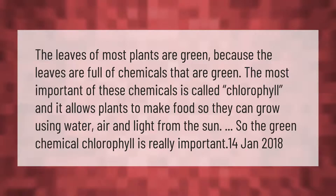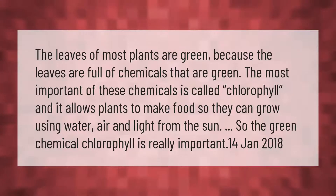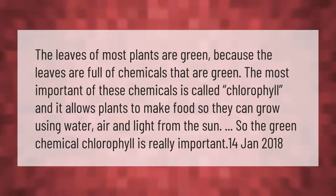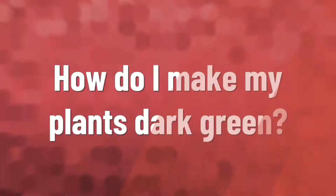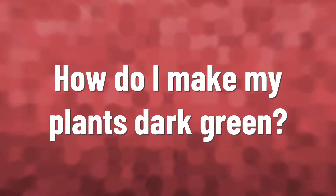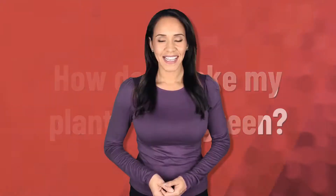The leaves of most plants are green because the leaves are full of chemicals that are green. The most important of these chemicals is called chlorophyll, and it allows plants to make food so they can grow using water, air, and light from the Sun. So the green chemical chlorophyll is really important.